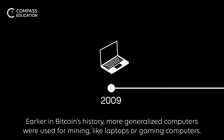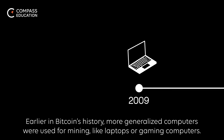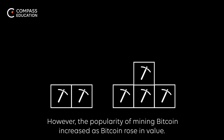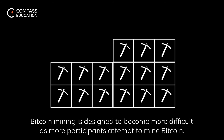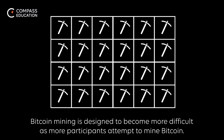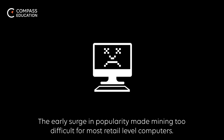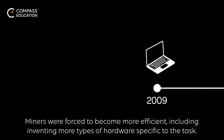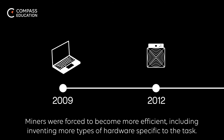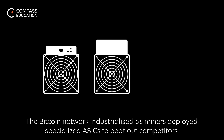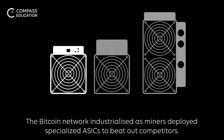Earlier in Bitcoin's history, more generalized computers were used for mining, like laptops or gaming computers. However, the popularity of mining Bitcoin increased as Bitcoin rose in value. Bitcoin mining is designed to become more difficult as more participants attempt to mine Bitcoin. The early surge of popularity made mining too difficult for most retail-level computers. Miners were forced to become more efficient, including inventing new types of hardware specific to the task. The Bitcoin network industrialized as miners deployed specialized ASICs to beat out competitors.